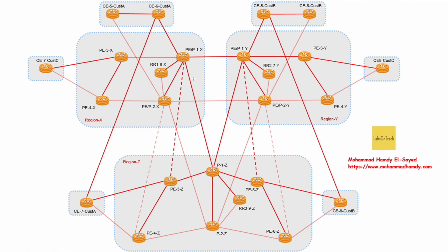All three regions are connected to each other using the core P routers. P1X is connected to P1Y and P1Z, and the same applies for other P routers. To enhance node and link redundancy, there are two planes in each region: Plane 1 and Plane 2. An additional level of protection is added for PEs in each region — they are connected to each other. For example, PE3X is connected to PE4X, PE3Z to PE4Z, and PE3Y to PE4Y.